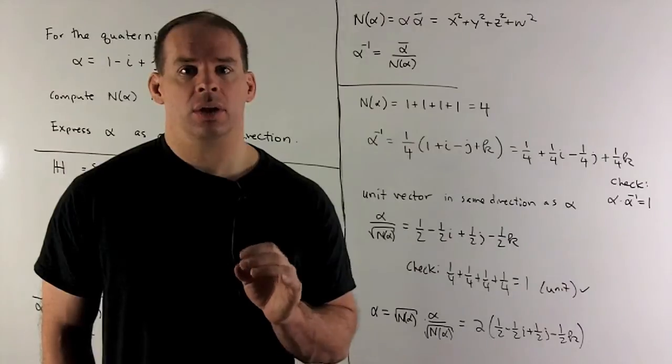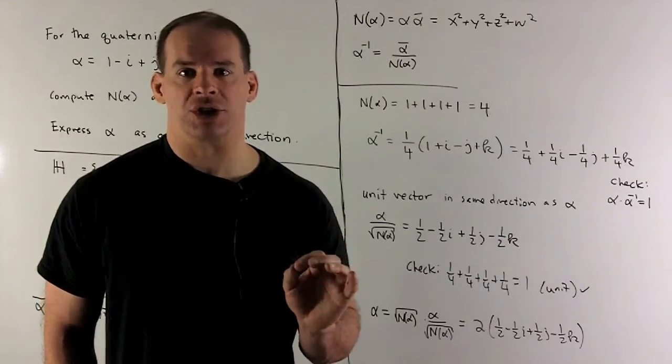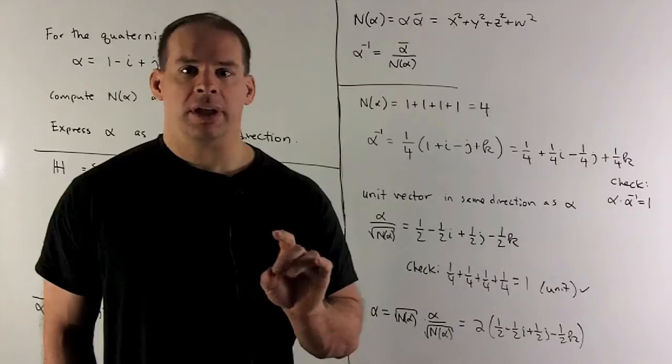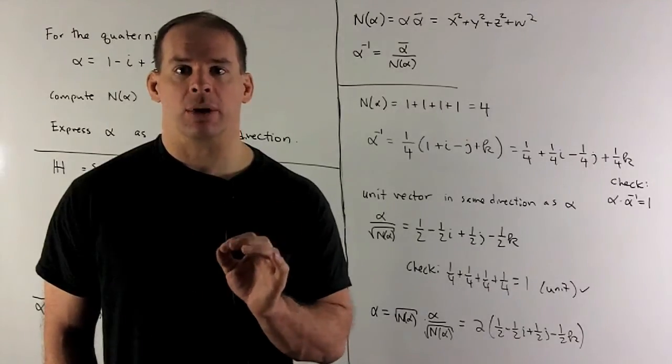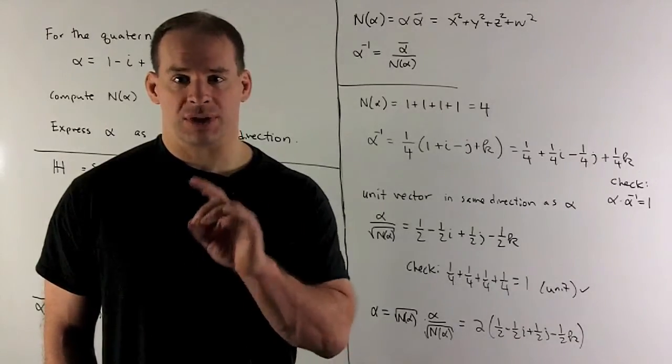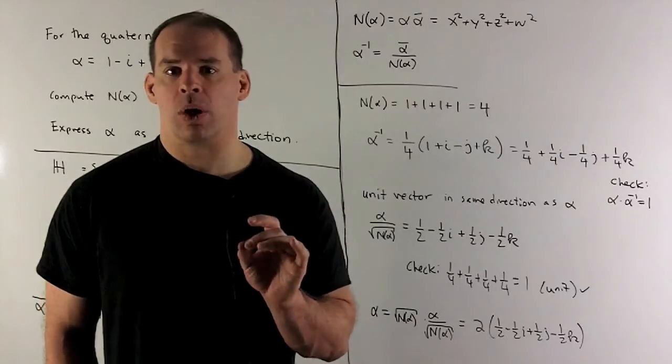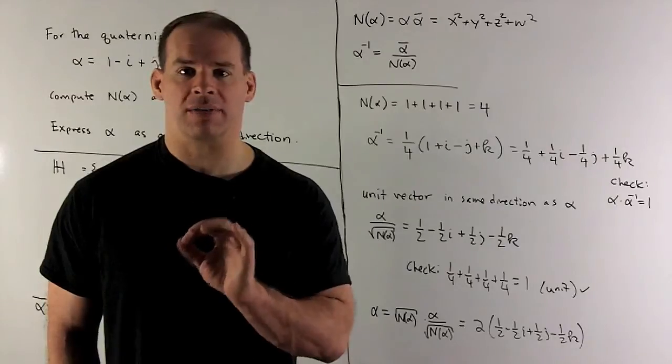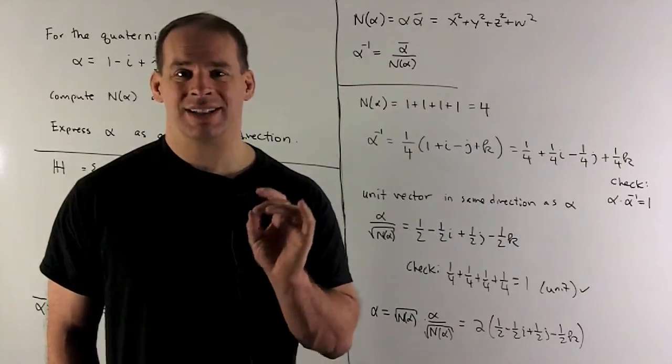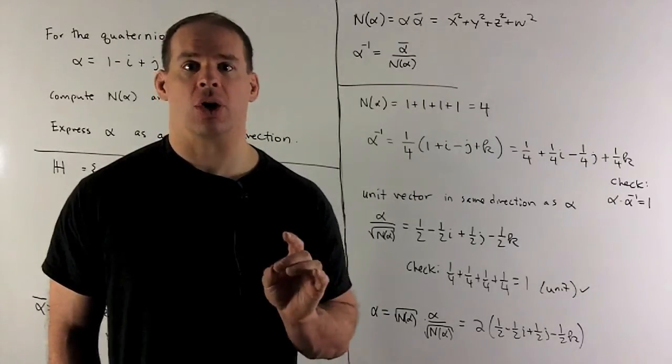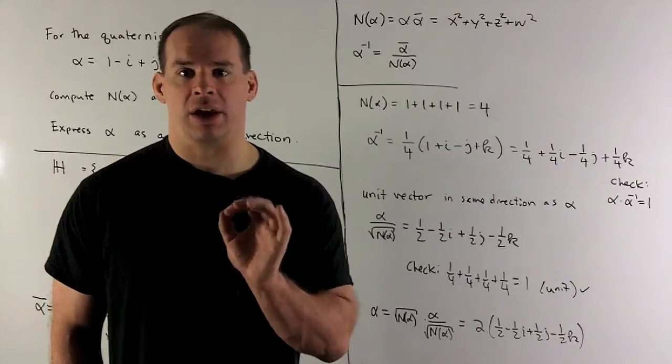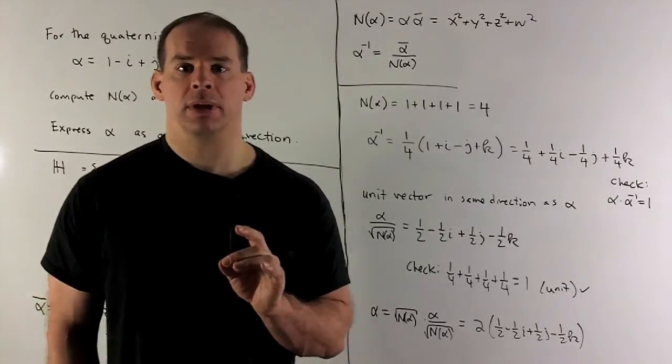Next, we're going to express alpha as a product of a length and a direction. Now, here we have another analog to the complex numbers. There, complex numbers are points in the plane. And then I can go to polar coordinates. And then we think of complex numbers as a product of a length or modulus times a point on the unit circle. So we have the same idea here for R4.